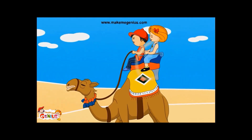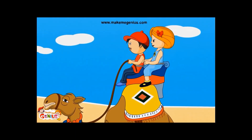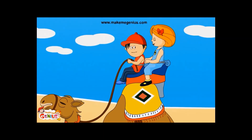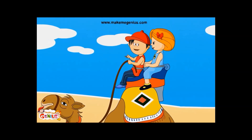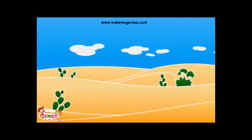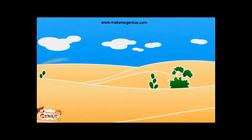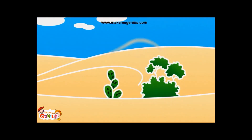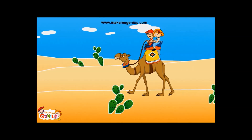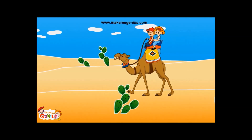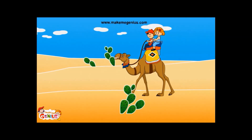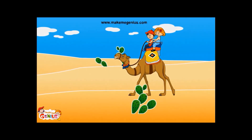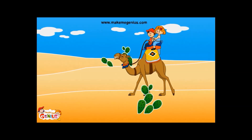The desert is such a dry area, there seems to be no water nearby. You are right. There is very little rain in the desert and there are no rivers here. But see, there are plants. I wonder how these plants are able to live in the desert without water.